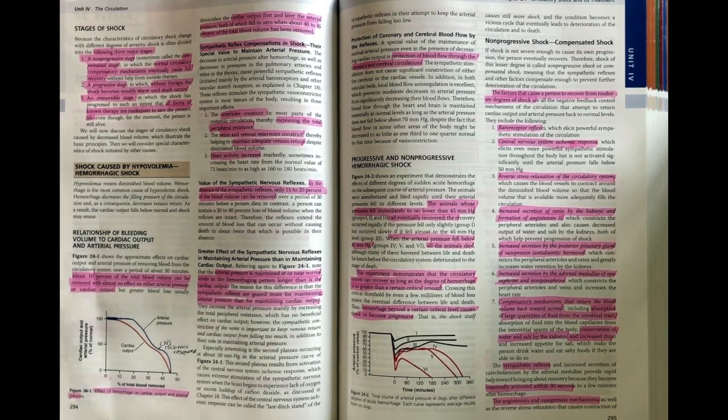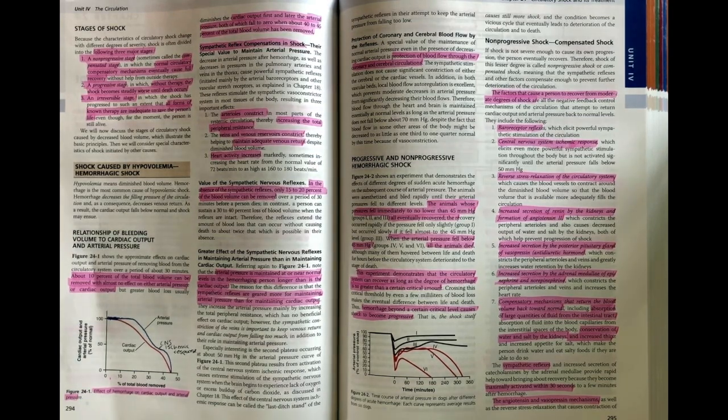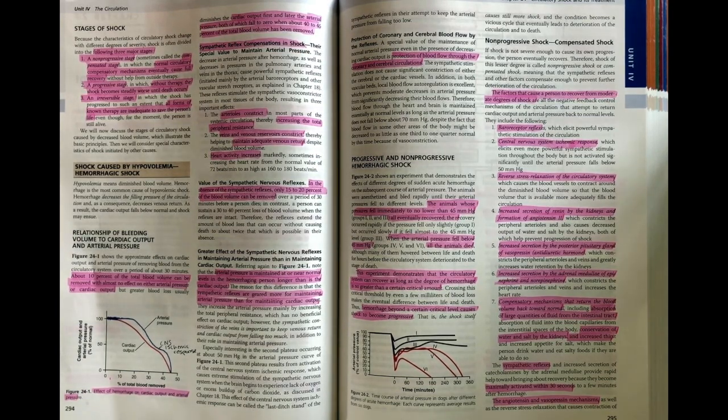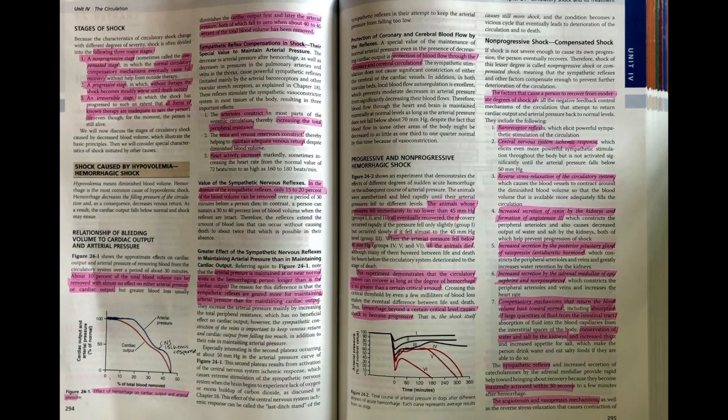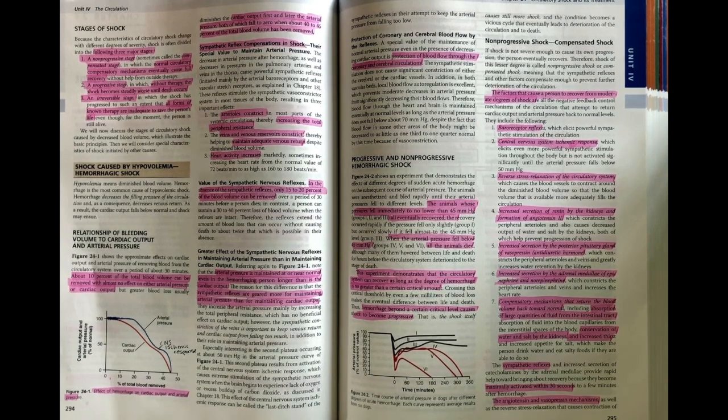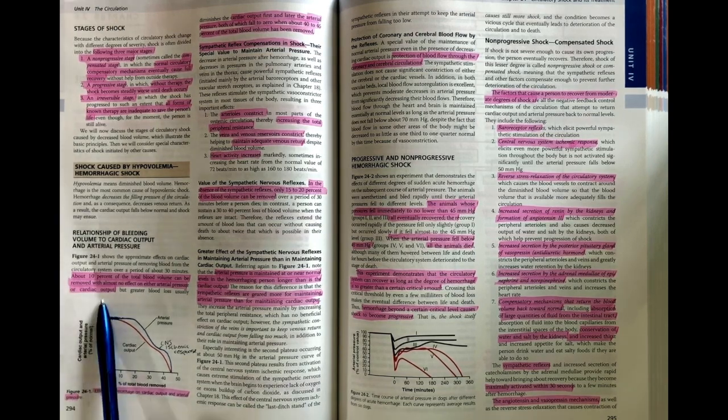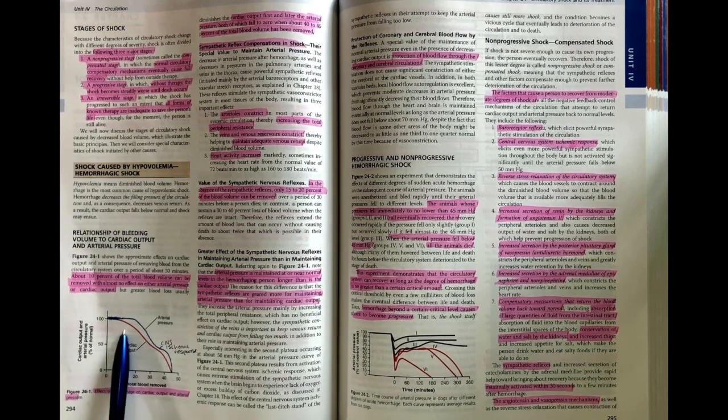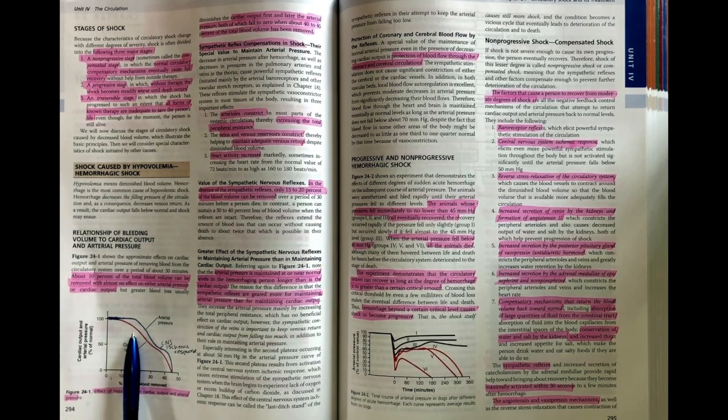This diagram here shows us how shock progresses relating to hemorrhagic shock. If we are actively bleeding, which reduces our blood pressure and cardiac output, a reduction in blood volume of 10% barely does anything. But as soon as we start to reduce more than that, we start to get a reduction in cardiac output.